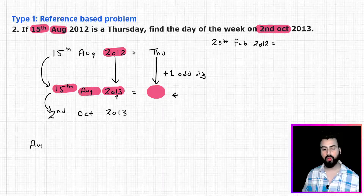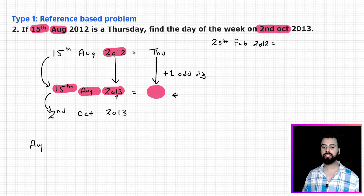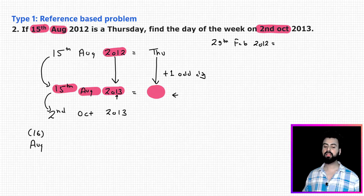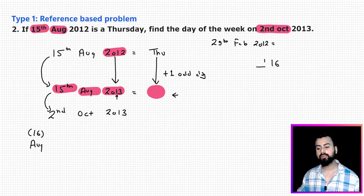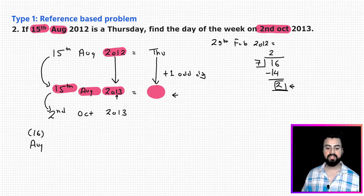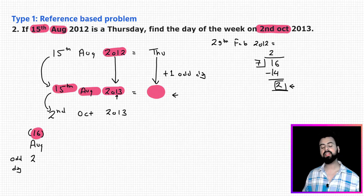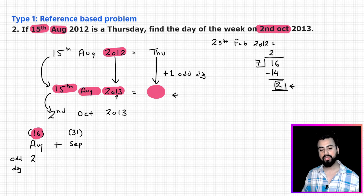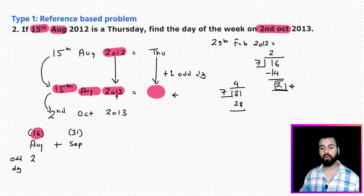Now from 15th August 2013, move to 2nd October 2013. In August there are 31 days; we're already at the 15th, so 16 days remain. Dividing 16 by seven gives a remainder of two — so adding 16 days equals adding two odd days. The next month, September, has 30 days. Dividing 30 by seven gives a remainder of two — so September contributes two odd days.